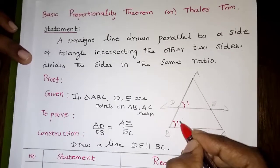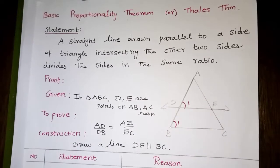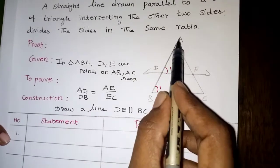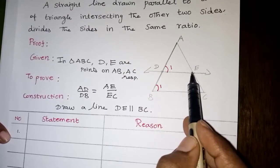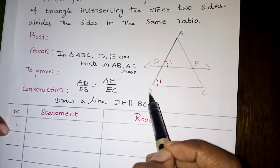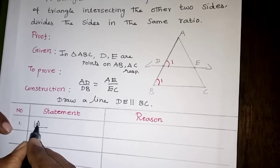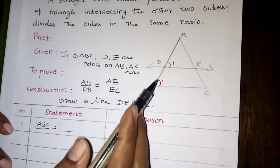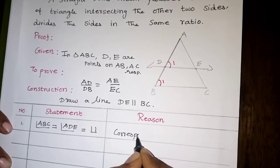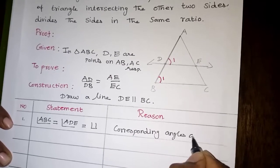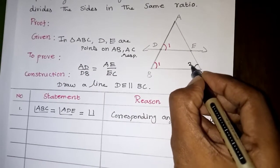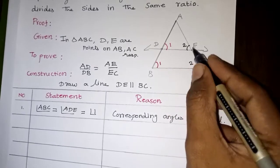Since the line is parallel, corresponding angles are equal. In triangle ABC and triangle ADE, angle ABC equals angle ADE — this is angle one. The reason is that corresponding angles are equal. Similarly, angle ACB equals angle AEC — this is angle two — and the reason is also corresponding angles are equal.